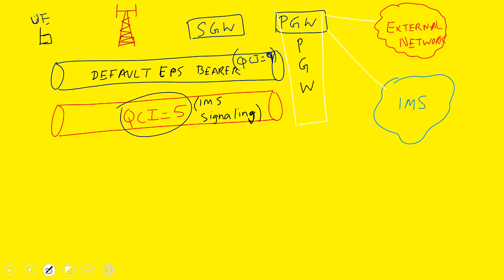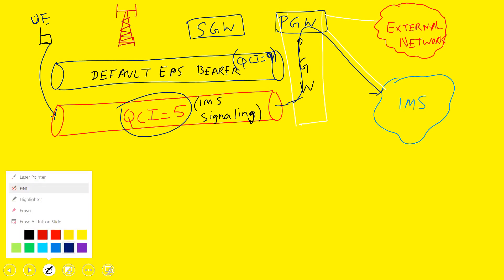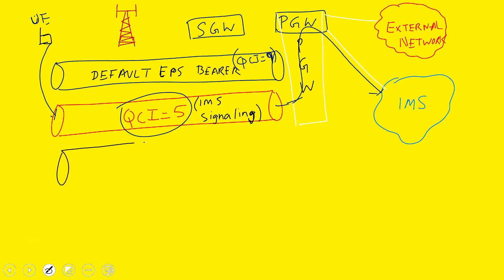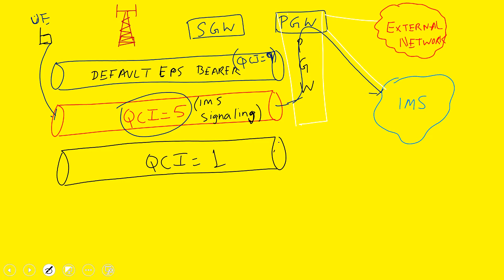Once QCI5 is established, it is responsible for carrying IMS signaling only. If a user wants to dial a phone call, QCI5 will carry the IMS signaling via the PGW towards the IMS. As a result of that signaling, the QCI1 bearer will then be established.